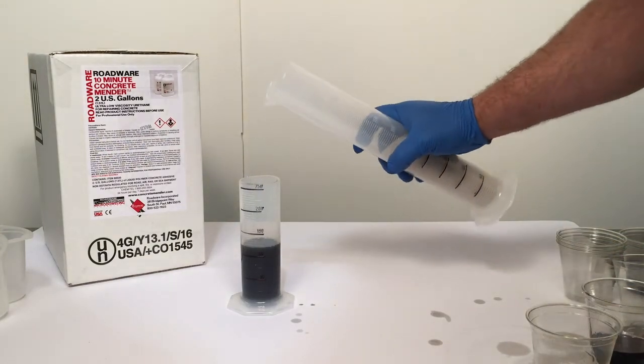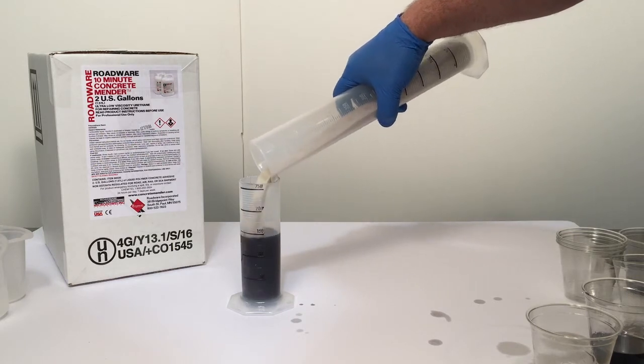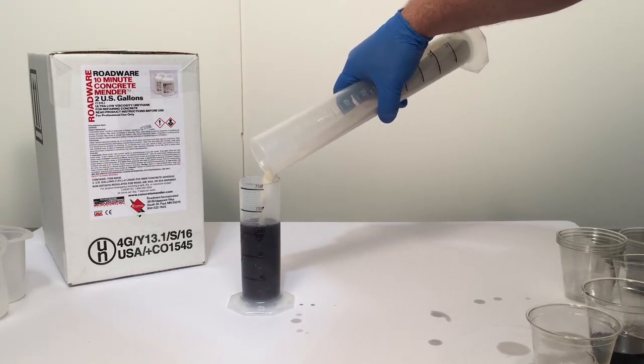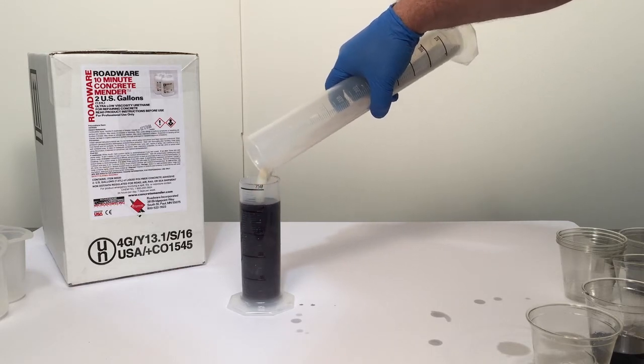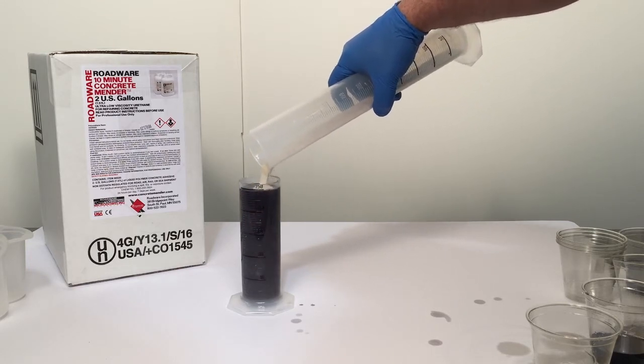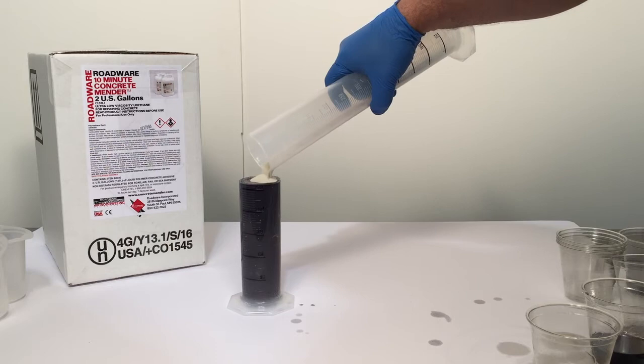I want enough sand to fill the entire hole as you see here. This is 40-30 grit silica sand and by pouring it into the Concrete Mender like this will ensure it gets completely saturated and will fill the repair all the way up to the top. It doesn't matter the diameter of the hole just as long as you fill it up halfway with Mender first and add the sand later.